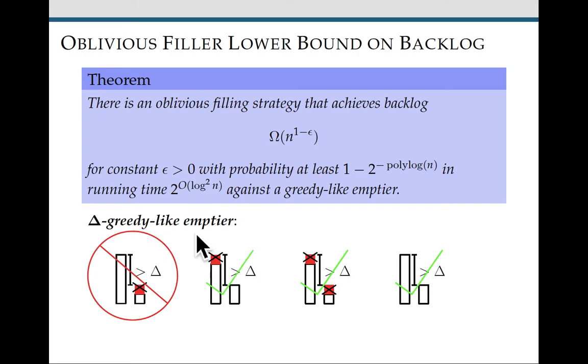So a delta greedy like emptier is an emptier such that whenever there's two cups and their fills differ by at least delta, it can't stand to empty from the less full one and not empty from the more full one. So I think I've shown this more clearly in pictures here.